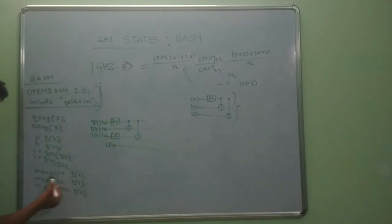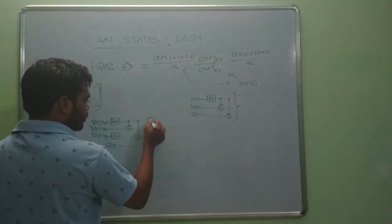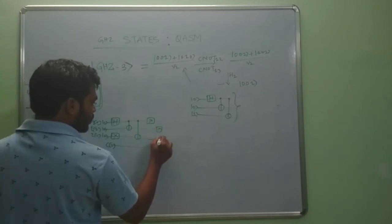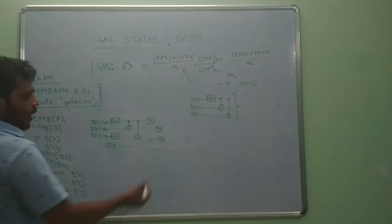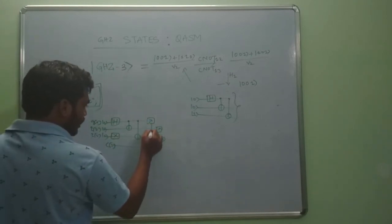Then we have measurement boxes. Write measure q0, measure q1, measure q2. After measurement, all the values are stored in the classical registers C0, C1, C2. The first measurement shows the values in C0, the second measurement shows the values in C1, the third measurement shows the values in C2.